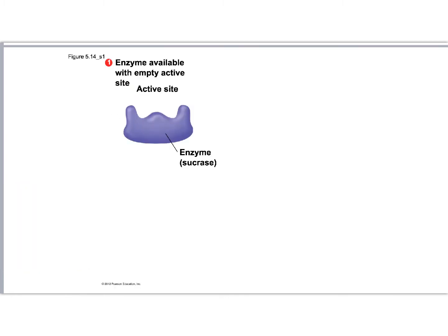Here's the textbook picture. Here's our enzyme — the purple part. The active site is highlighted in honey gold right here. This enzyme is called sucrase. Anytime you see '-ase' in the name, you know you're dealing with an enzyme — keep your eyes peeled for that. This is an example of the enzyme when it's empty: no substrates around, no work to be done.